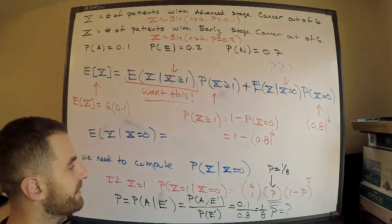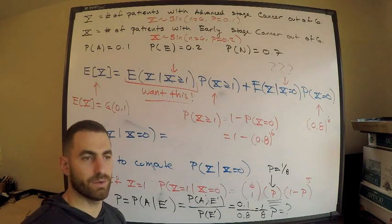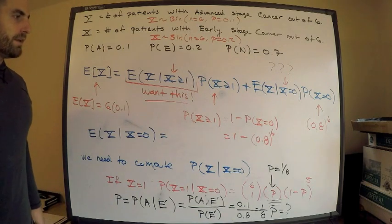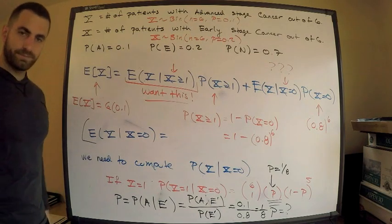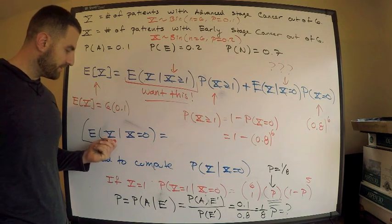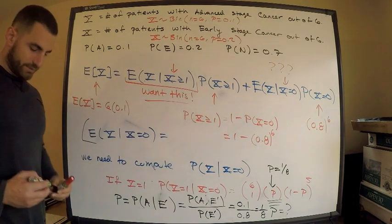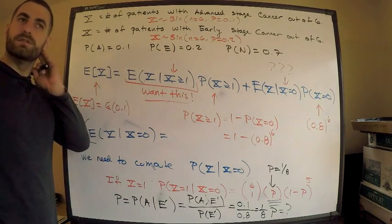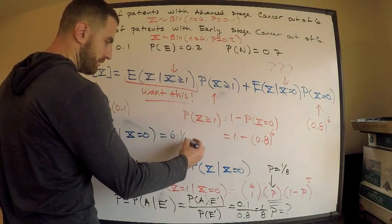We've answered our question. The conditional random variable Y | X = 0 is binomial with N = 6 and probability of success P = 1/8. For any binomial distribution, the expectation is NP, so E[Y | X = 0] = 6 times 1/8, which equals 3/4.